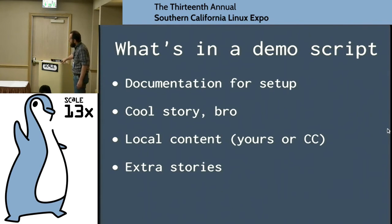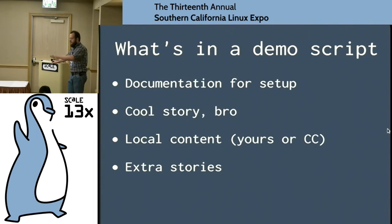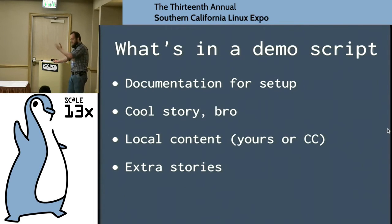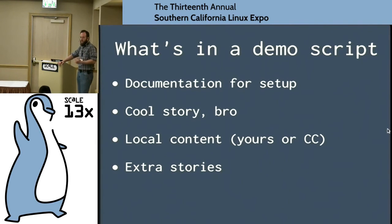The demo script also needs to cover what the locally installed content is. When you have a story around a piece of text or an image the user is working with, you say: this is our image, here's the filename, this is our picture of Johnny on the slide — you explain what the content is. And then you have some extra stories you can use if the user you're demoing to is really interested, they ask a question, and you can jump over to another story and hopefully show them something fairly close to what they asked about.